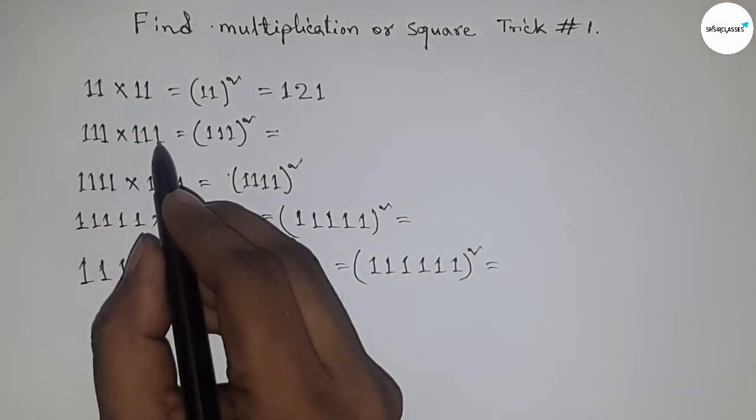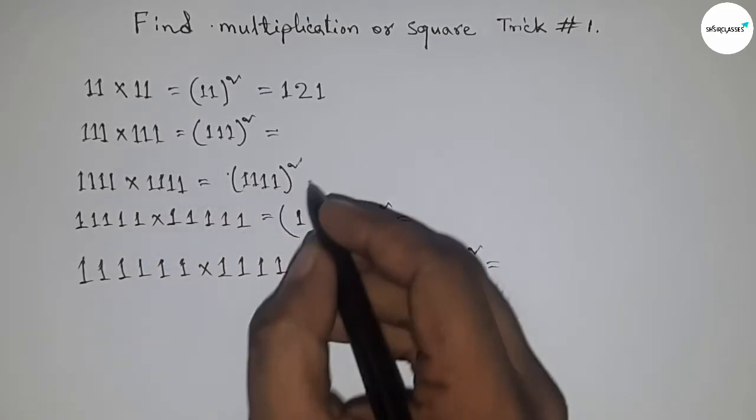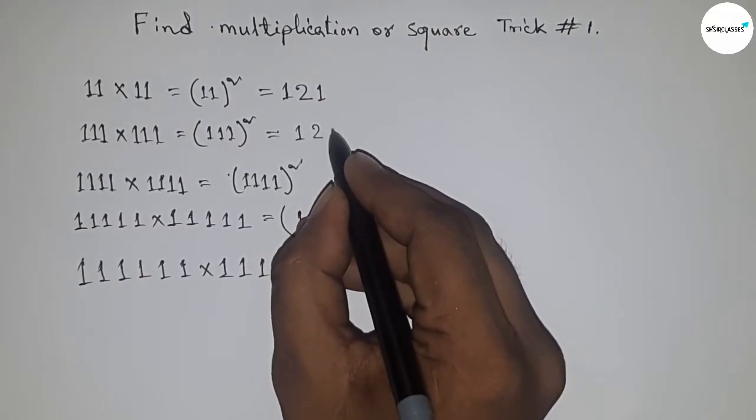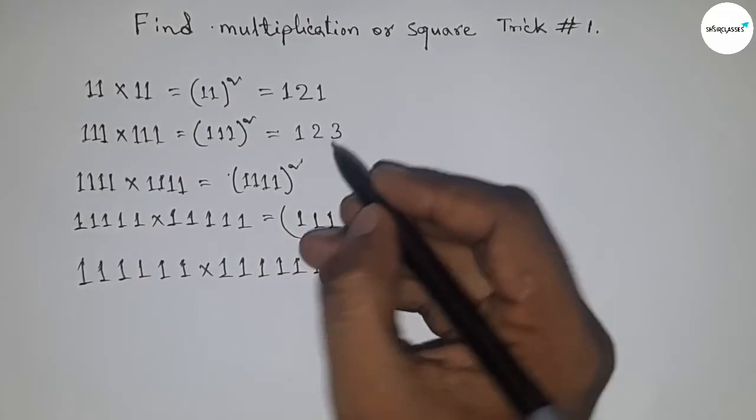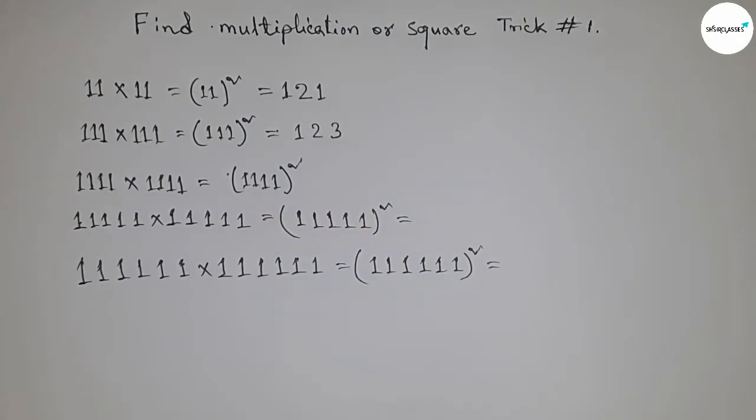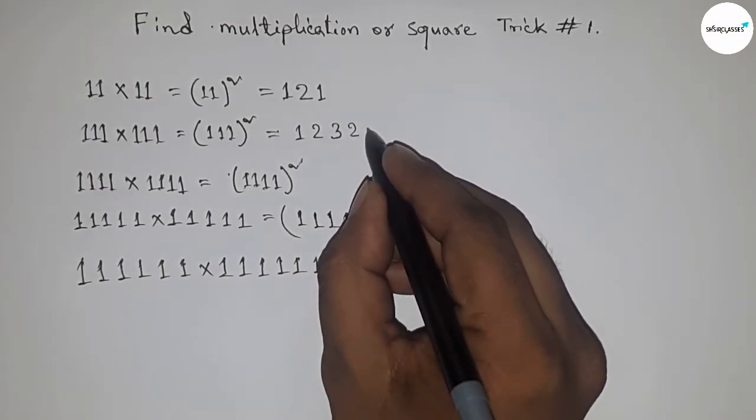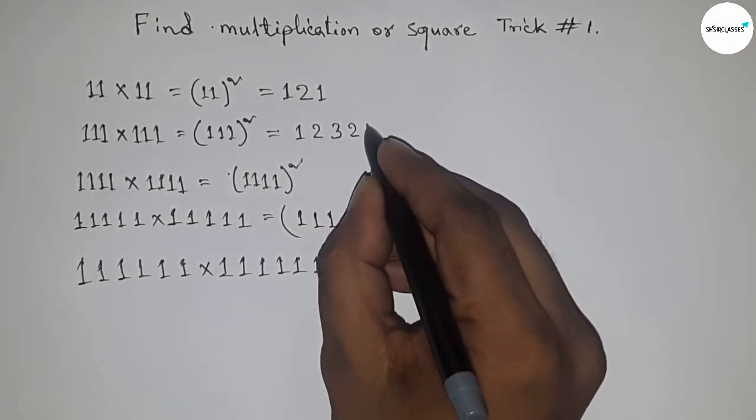Next, let me clear the trick. Here three ones multiplying with three number of ones. So first, for three ones, we have to write 1, 2, 3. Then reversely we write 2, then 1.